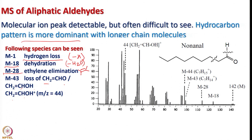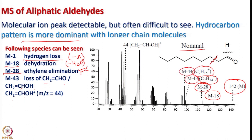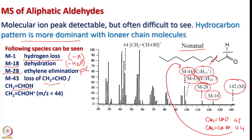A typical mass spectrum of nonanal is shown here. It has a longer chain, and fragments look almost similar to those of long-chain saturated hydrocarbons. The base peak is at 142. Loss of water can be seen, loss of ethylene can be seen, and loss of C7H14 or C7H15 can also be seen. The loss of 43 — due to CH2CHO — and loss of 44 — due to CH2CHOH — are present, with the latter appearing almost as a base peak.